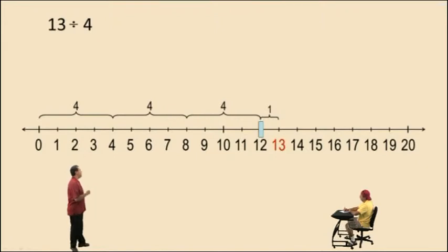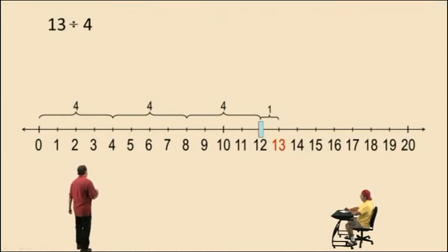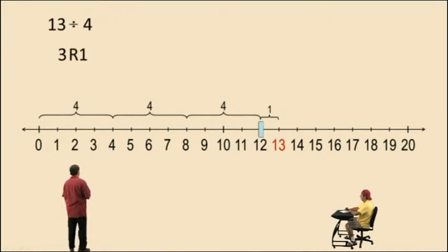But notice we have one remaining unit. When our remaining unit is less than the number we're dividing by — in this case it's less than 4 — we stop and write down our answer. 13 divided by 4 is 3, because 3 whole 4's go into 13, but you have one remaining unit, so we write that as remainder 1.